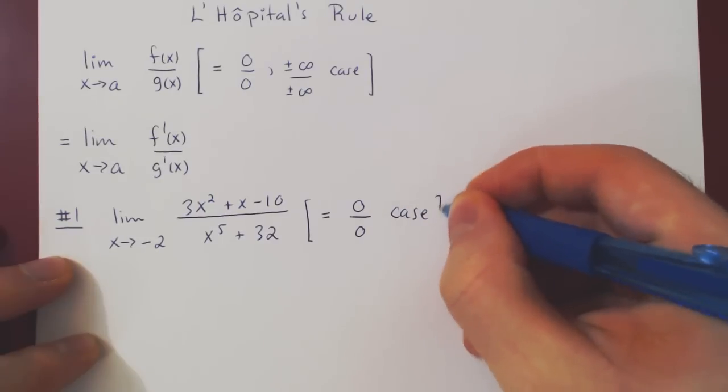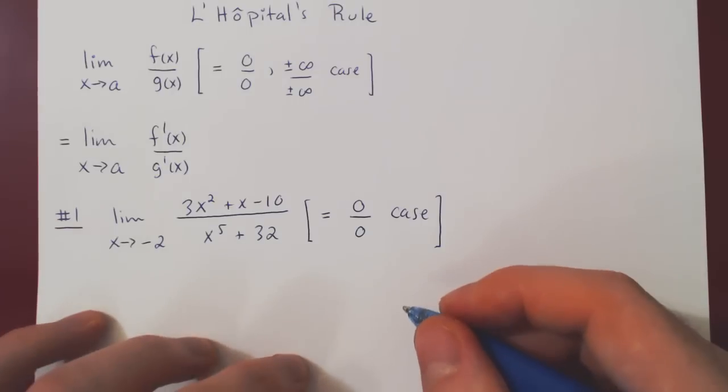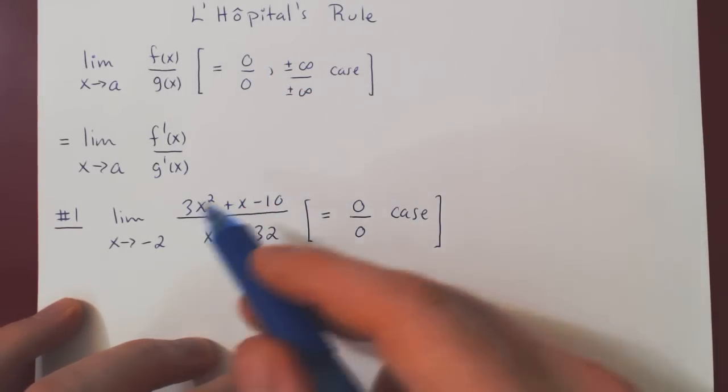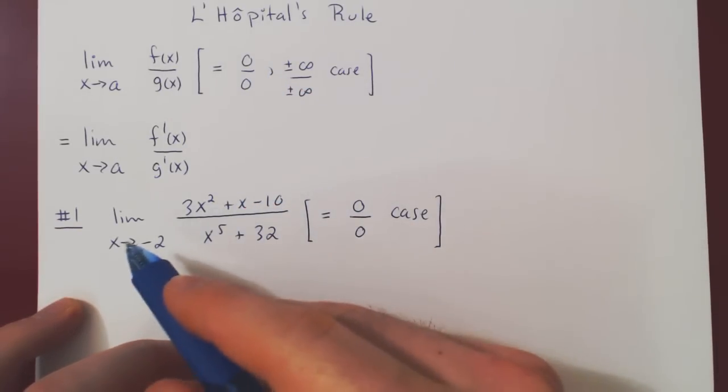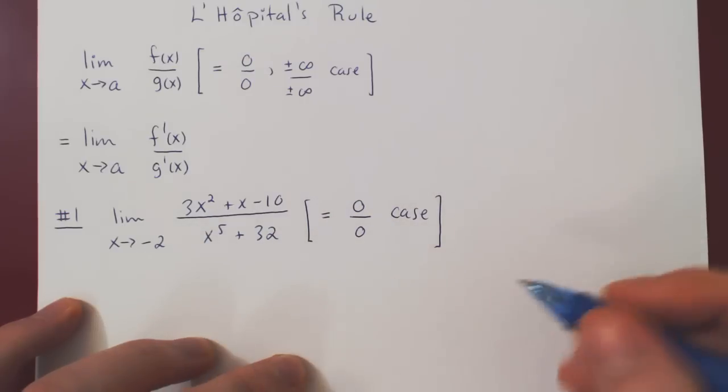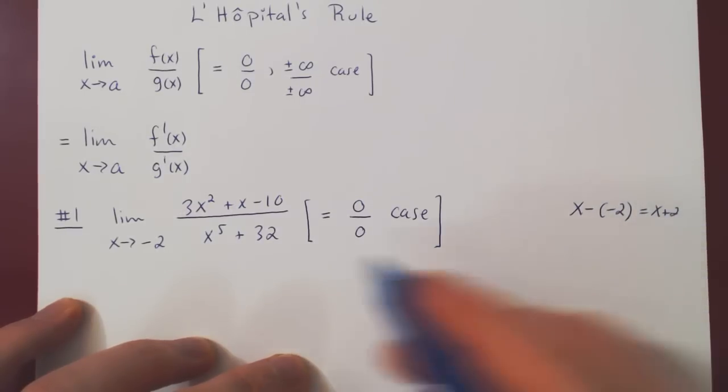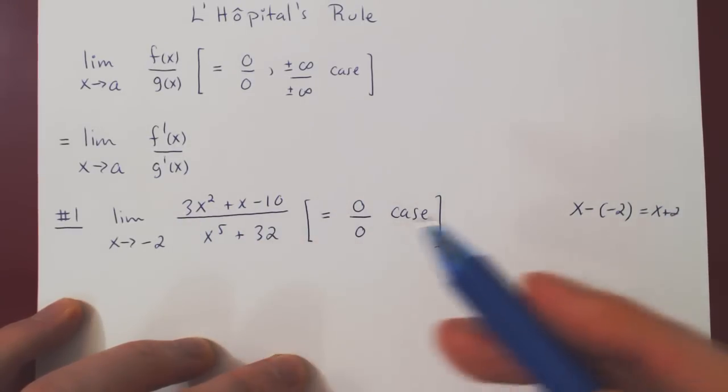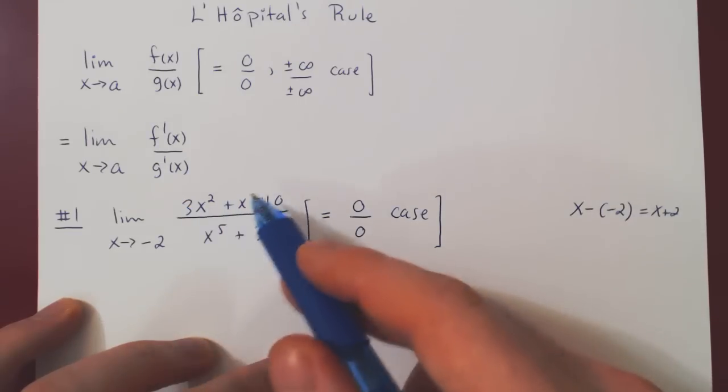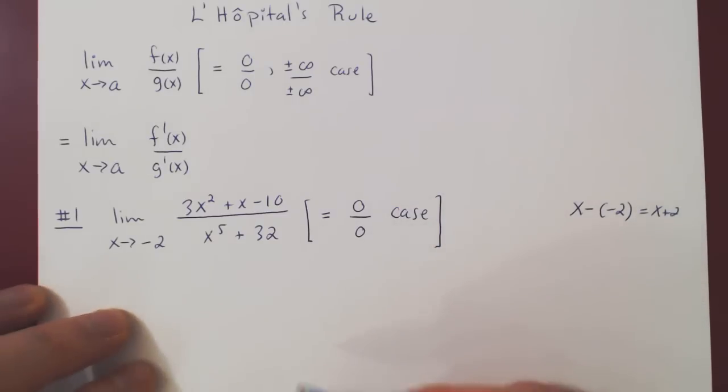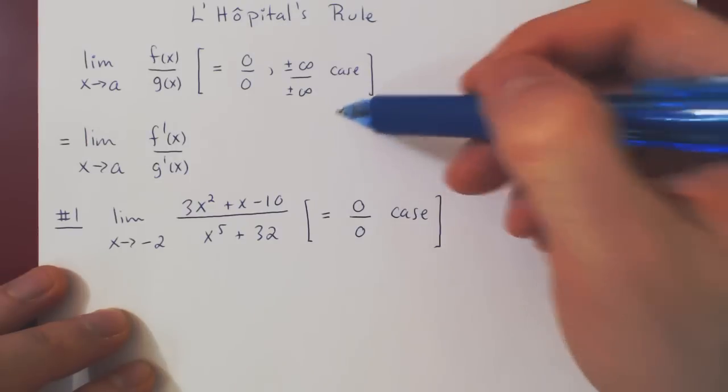So we have a 0 over 0 case, and here we can apply L'Hopital's rule. Now, just in passing, since both polynomials are 0 at negative 2, we know that x plus 2 is a factor of both polynomials. So you could, using long division, divide both polynomials by x plus 2, and you would arrive at the same answer. But in this video, we are going to use L'Hopital's rule.